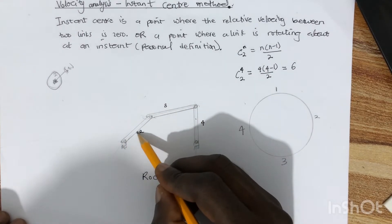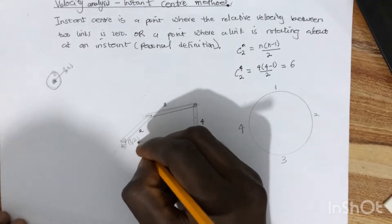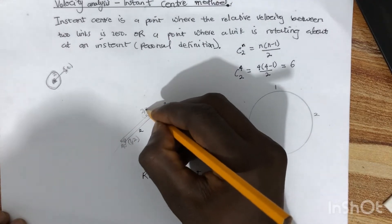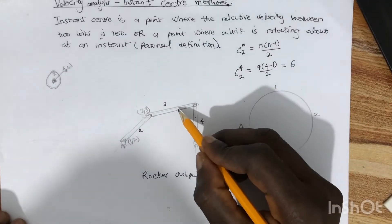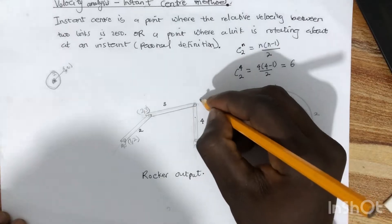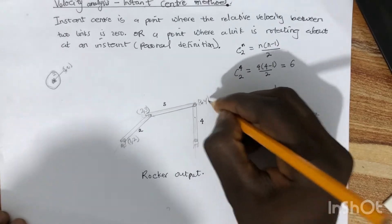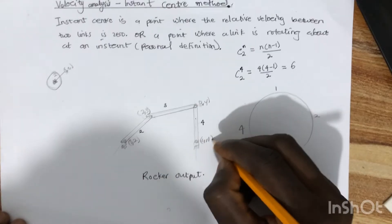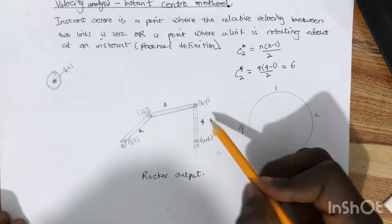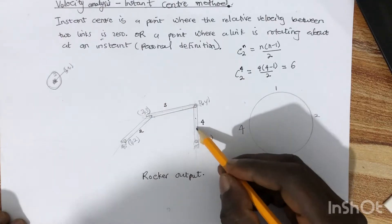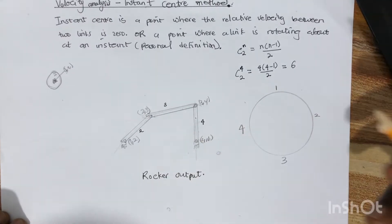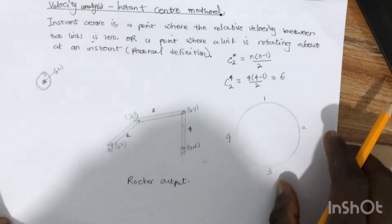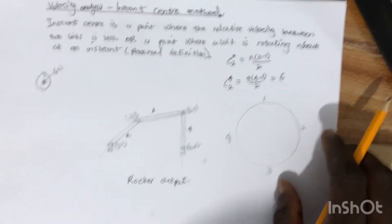Looking at the diagram, the joint between the ground link and link two is labeled as 1,2. The joint between links two and three is labeled 2,3. The joint between links three and four is labeled 3,4. And the joint between the ground link and link four is labeled 4,1. However you label it — one-two or two-one — it refers to the same joint between two links.